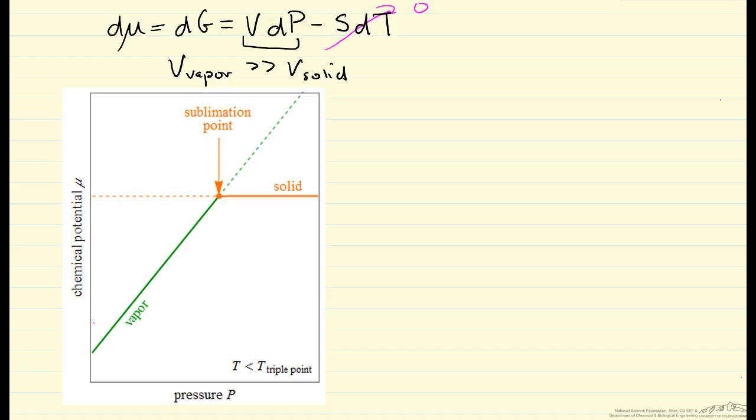The phase with the lower chemical potential is the stable phase, so the solid lines correspond to the stable phase: low pressure vapor, high pressure solid.